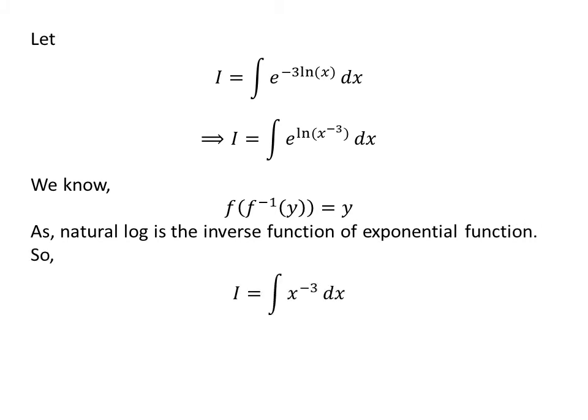We know that the natural log is the inverse function of the exponential function, so exponential of natural log of x to the power minus 3 is equal to x to the power minus 3. So I is equal to the integral of x to the power minus 3 with respect to x.